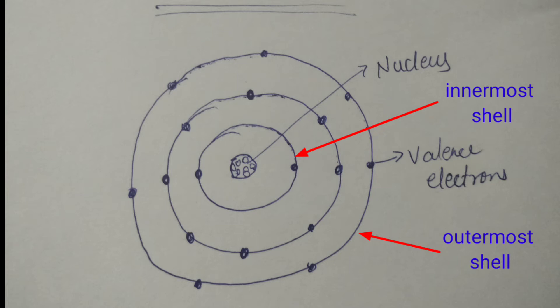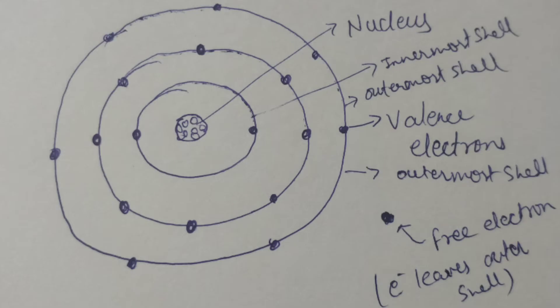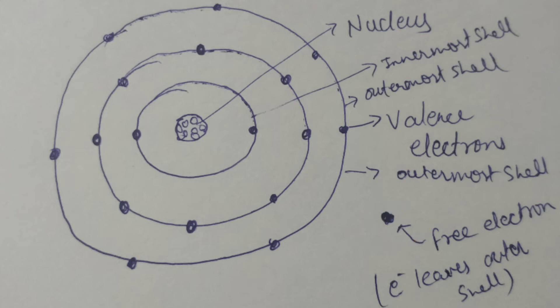The valence band is the band having the highest occupied energy. Now, regarding the conduction band: valence electrons are so loosely attached to the nucleus that even at room temperature some leave to become free electrons. These free electrons conduct current in a conductor and are called conduction electrons. The band containing conduction electrons is called the conduction band, which is the band having the lowest occupied energy. The gap between the valence band and the conduction band is called the forbidden energy gap.